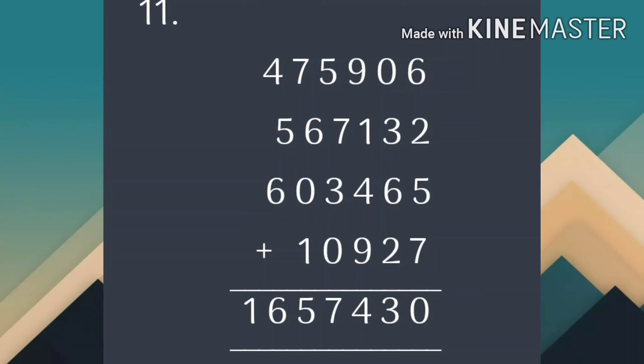2+3=5, 5+6=11, 11+2=13 - 3 carry 1. 9+1=10, 10+1=11, 11+4=15, 15+9=24 - 4 carry 2. 5+2=7, 7+7=14, 14+3=17, 17+0=17 - 7 carry 1. 7+1=8, 8+6=14, 14+0=14, 14+1=15 - 5 carry 1. 4+1=5, 5+5=10, 10+6=16. ठीक है? ये question हमारा solve हो गया।